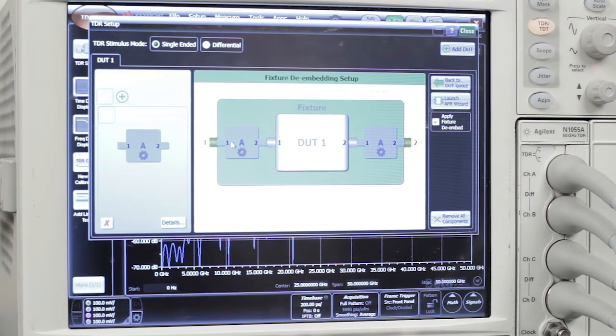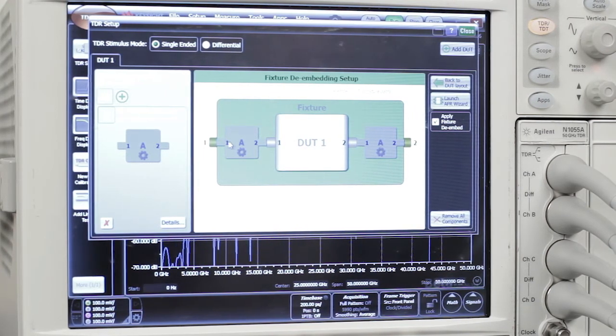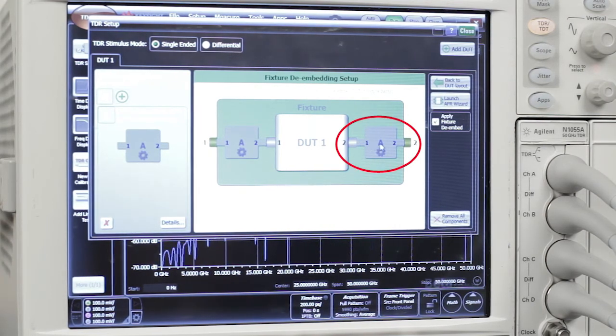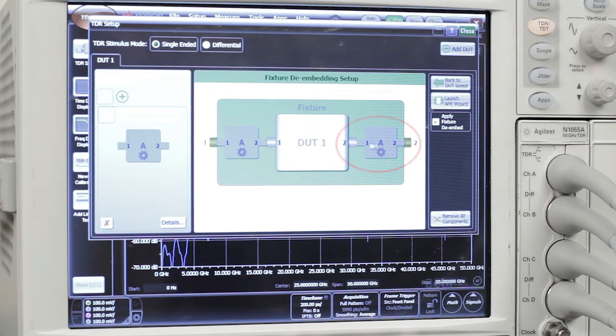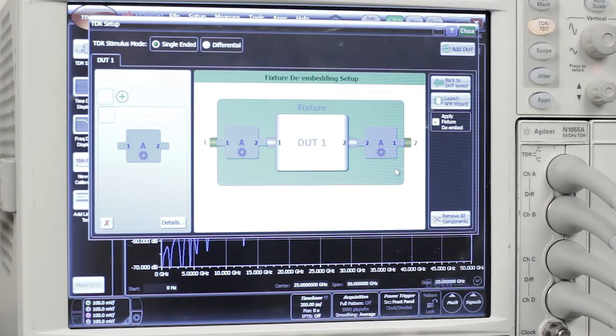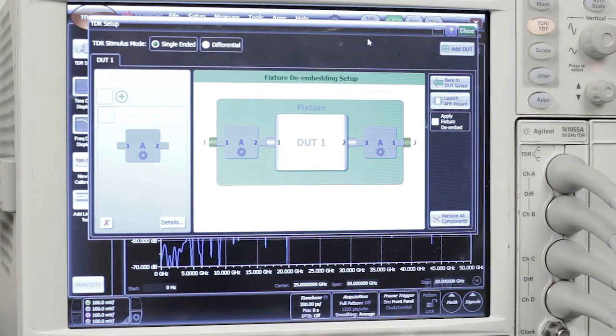Port one of the fixture is the connectorized port, which is connected to the TDR. So over on this port, we need to change the configuration of the fixture. So port one is connected to the TDR and port two is connected to the DUT. And it's very easy to reverse those. So there you go. By checking this box, we can remove the fixtures. By unchecking it, we'll have the fixtures in place. Let's leave it unchecked for now.